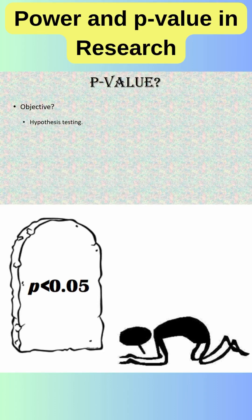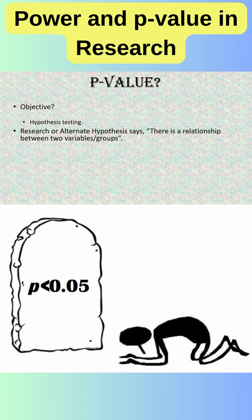If you are studying the relationship between two variables or comparing two groups, then you postulate and test a hypothesis. Research hypothesis or alternate hypothesis says there is a relationship between two variables, whereas null hypothesis says there is no relationship.